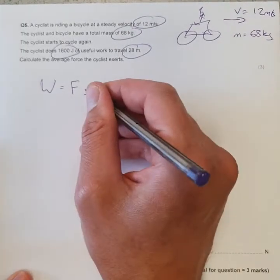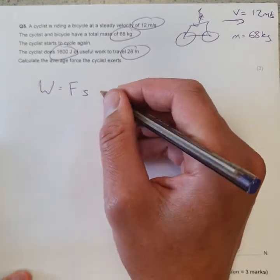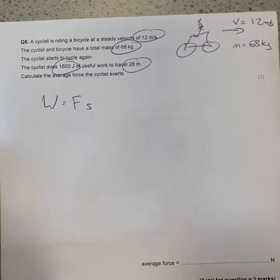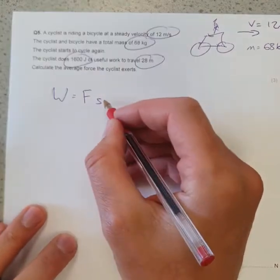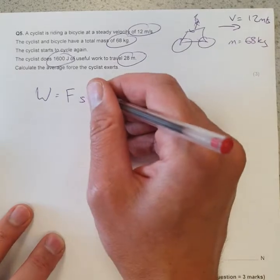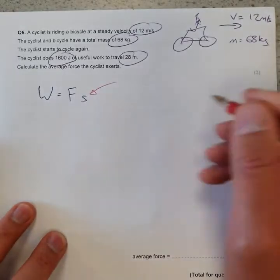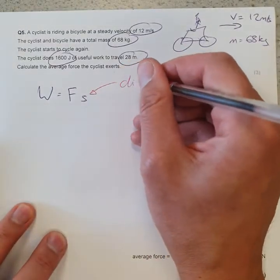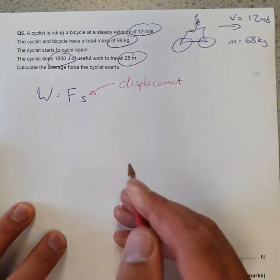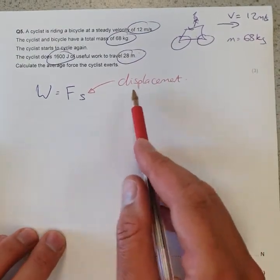Now it's really key here to know what s means. s is not the speed - you remember speed, we used a v for velocity, for speed. s stands for the displacement. Displacement, so that's just a distance in a set direction.